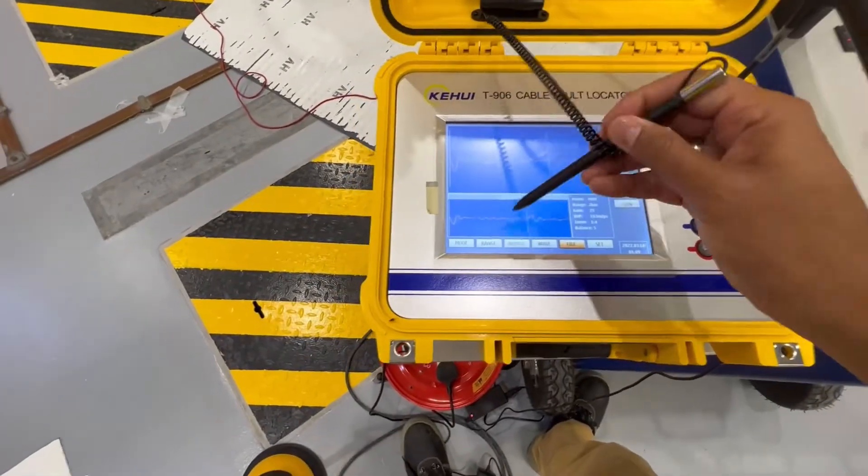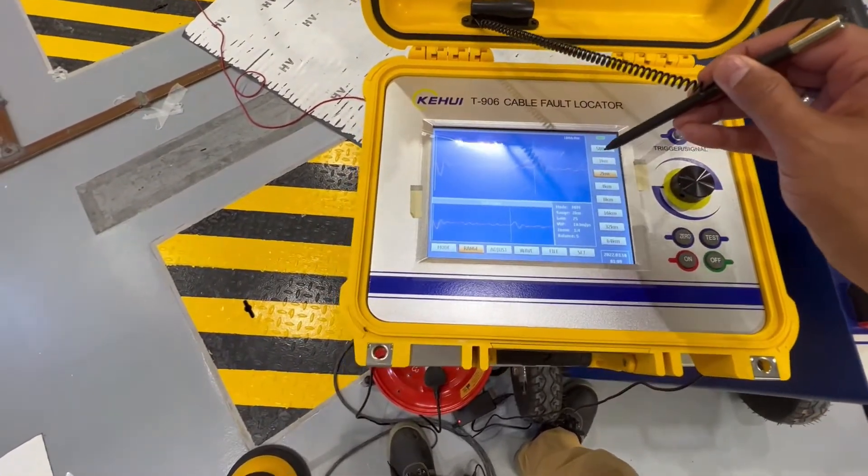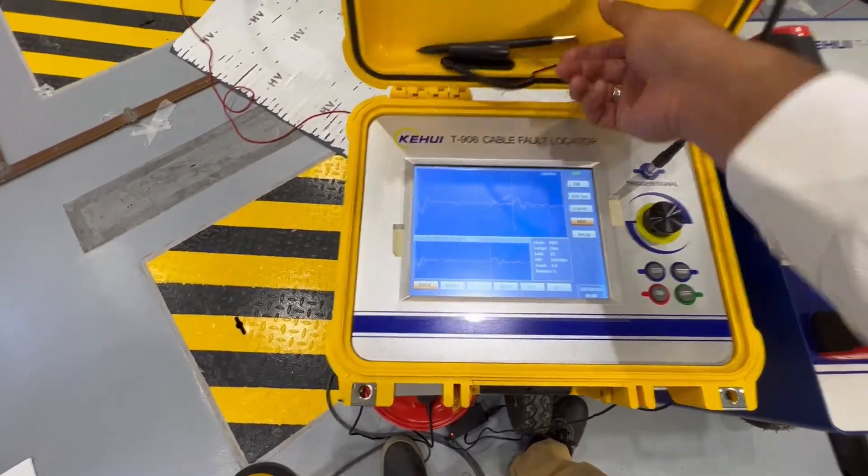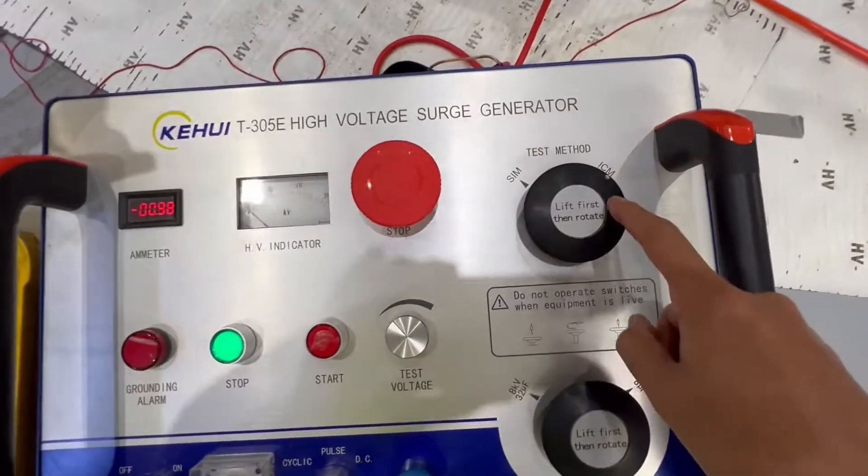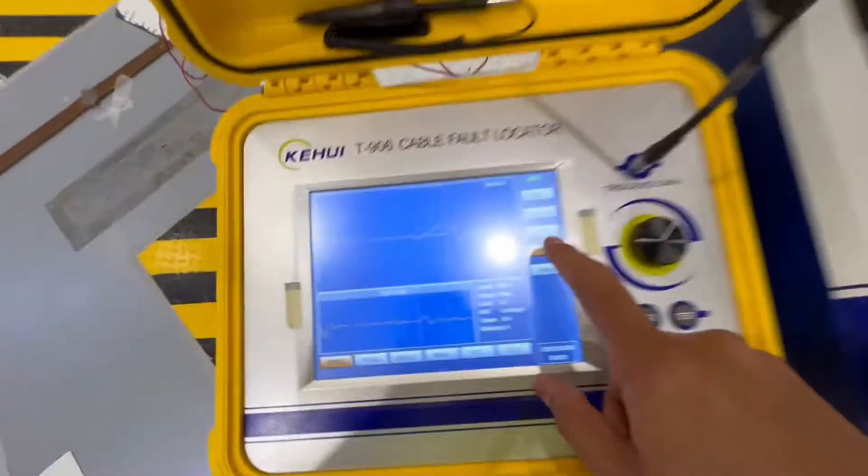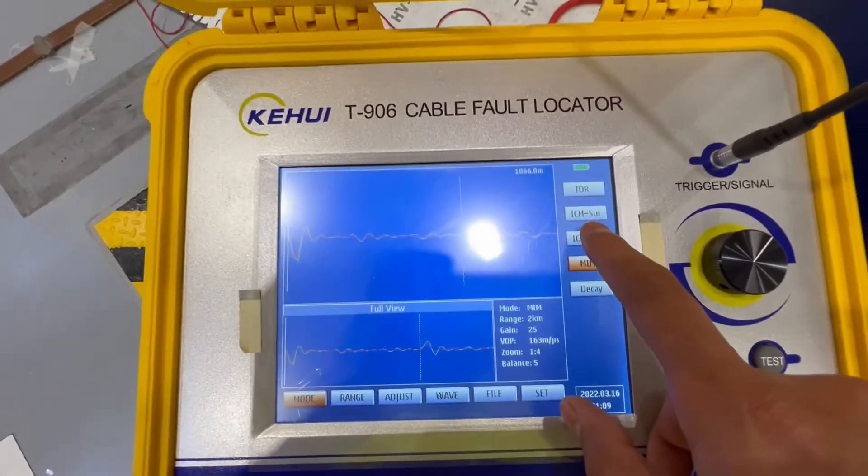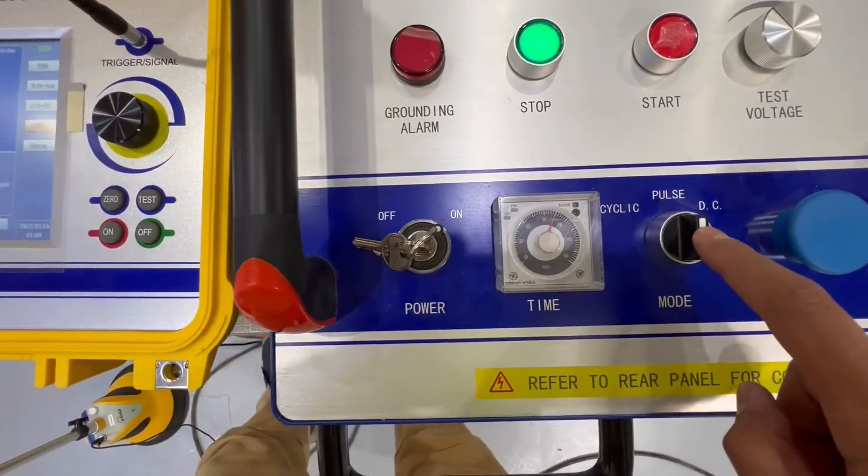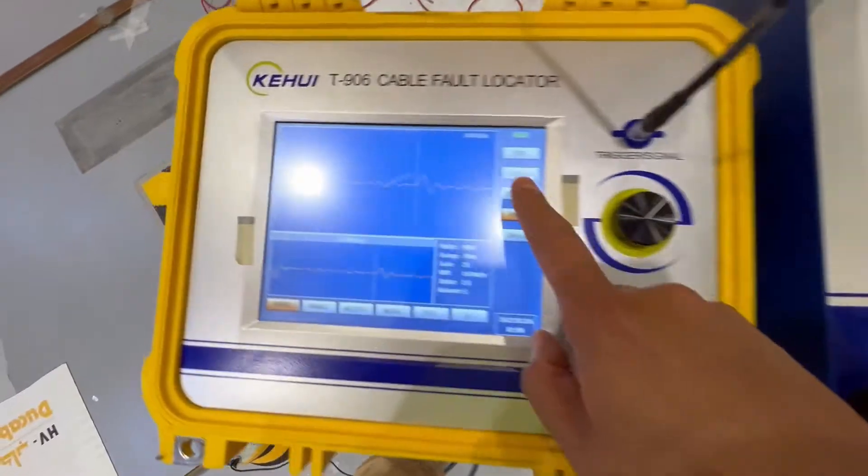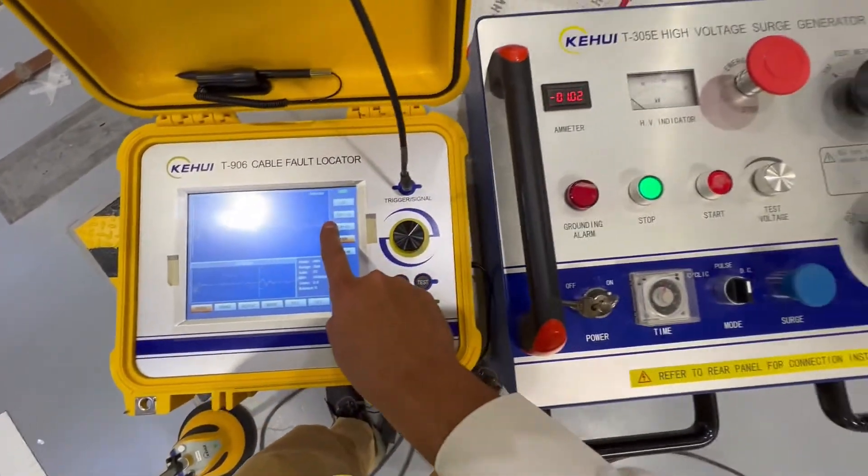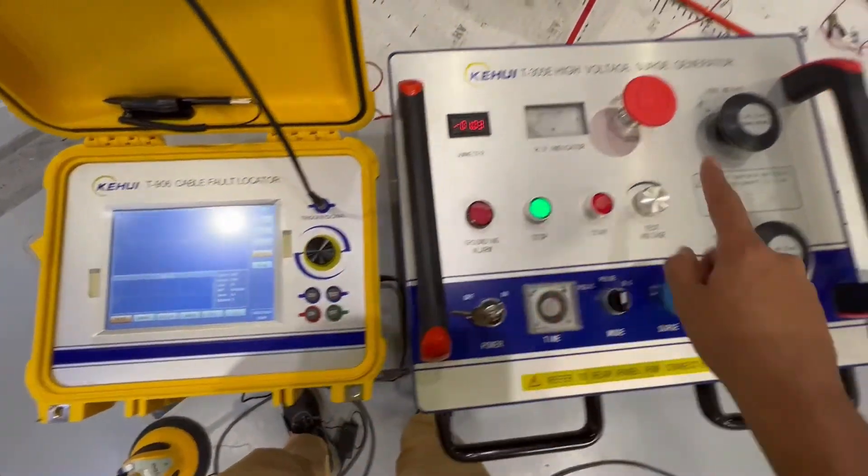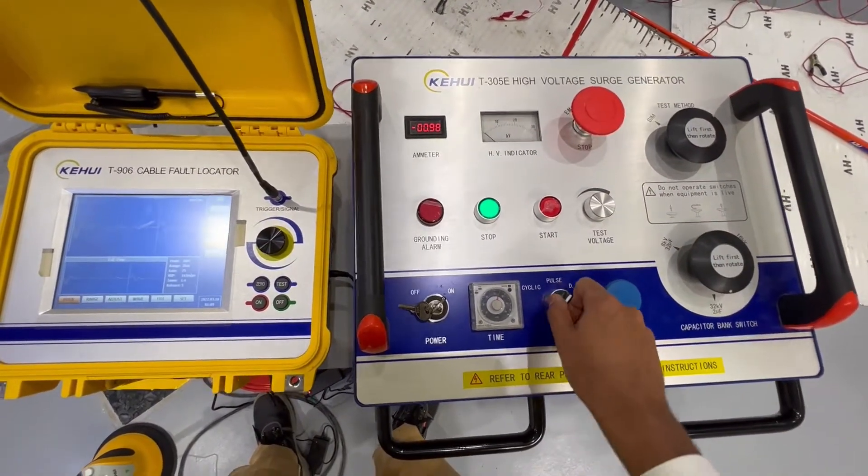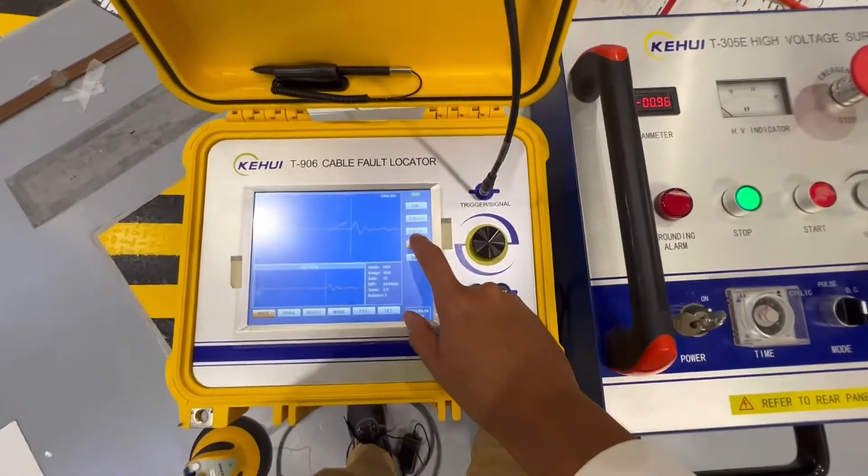You select the range, 2 kilometers, and then select the mode. If you want to do ICM method from the surge generator, you have to select ICM surge. ICM surge is only for a single pulse. If you want to have ICM DC, the test method will be ICM and the mode will be DC.